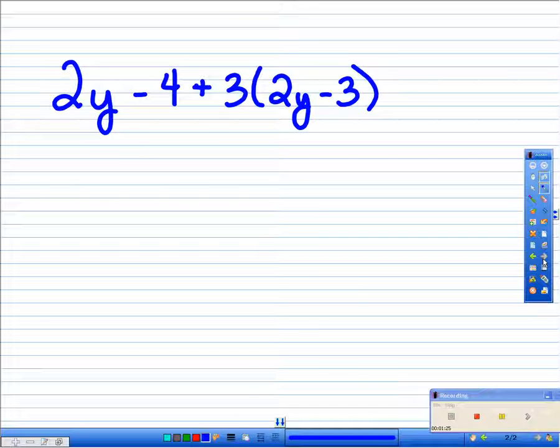2y minus 4 plus 3, and in parentheses, 2y minus 3. Well, before we start this problem and put things together, we need to simplify it and use the distributive property.